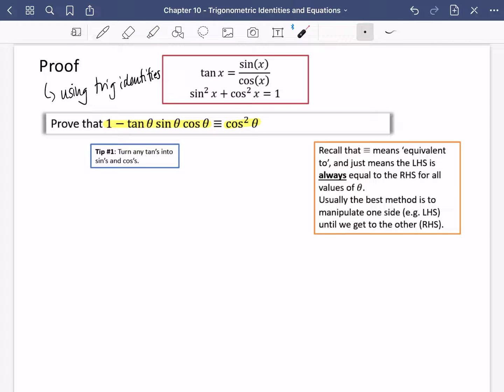First of all, recall that this sort of three-line equals sign actually means equivalent to. What it means is that the left-hand side, LHS, is always equal to the right-hand side, RHS, for all values of θ. So it's a bit more than an equation. It's saying that this and this are always equal to each other.